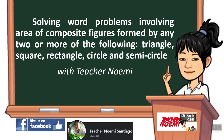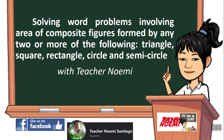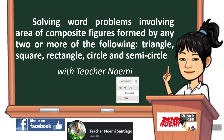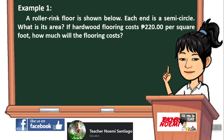Hello, welcome to my YouTube channel. Today we're going to talk about solving word problems involving area of composite figures formed by any two or more of the following: triangle, square, rectangle, circle, and semicircle.